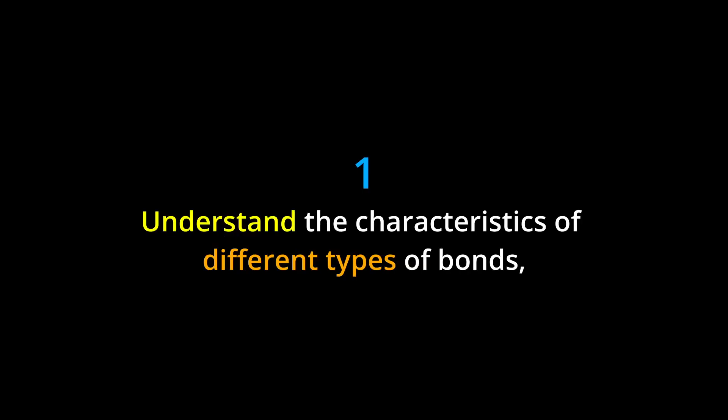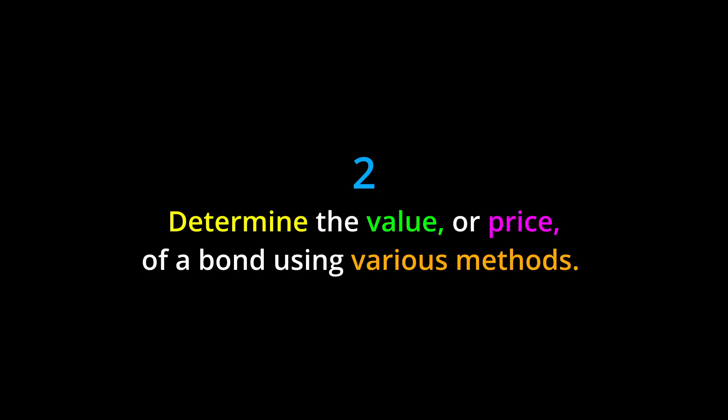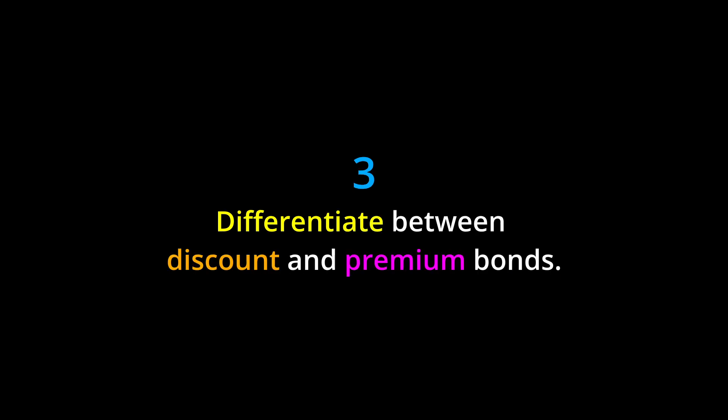Learning Objectives. By the end of this chapter, you should be able to: 1. Understand the characteristics of different types of bonds, such as government bonds and corporate bonds. 2. Determine the value, or price, of a bond using various methods. 3. Differentiate between discount and premium bonds.